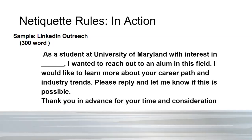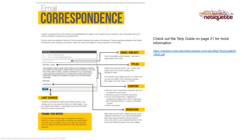We also have information about how to write an email. In our TERP guide, found at careers.umd.edu, there is a page on email correspondence that gives you a sample of how to structure it — the subject line, the content, your address — and even under the last-chance area it reminds you to proof and reread to make sure you're doing it correctly.